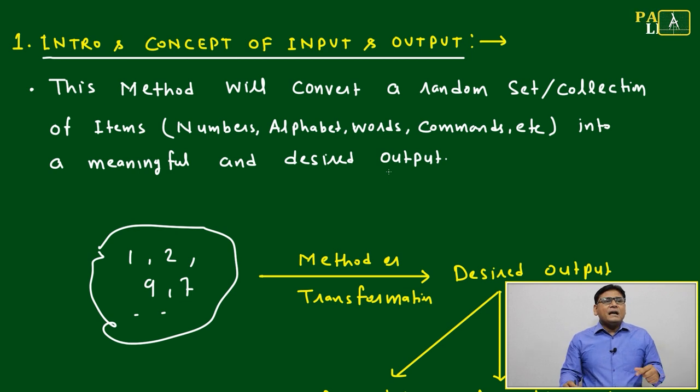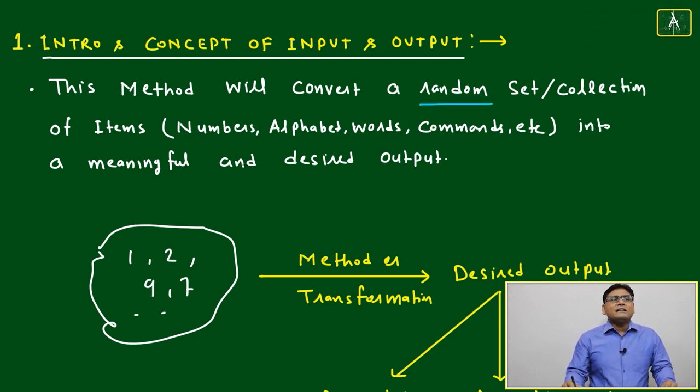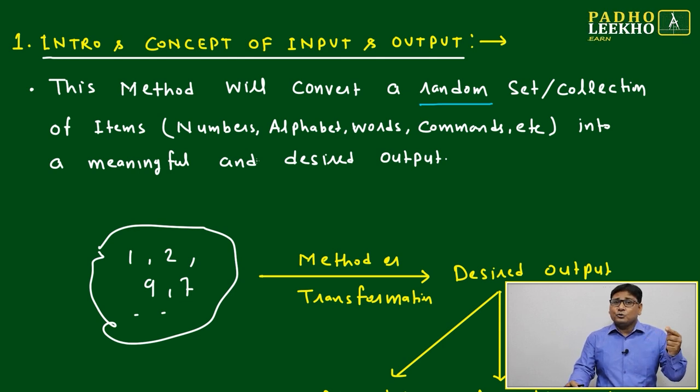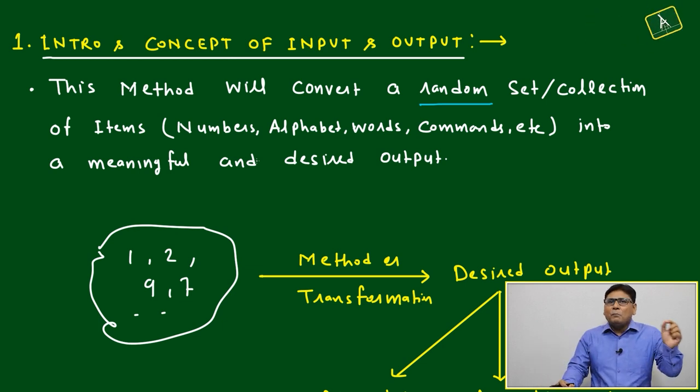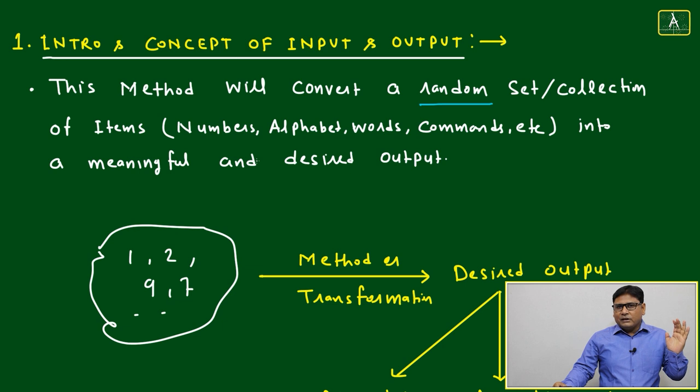This method will convert a random set or collection of items in the form of numbers, alphabets, words, or commands. Now you can understand how much it can be extended. Maybe it is a set of commands for a computer operation given as input, and that set of commands can transform based on movement and interchange, and you will be able to get the desired output.